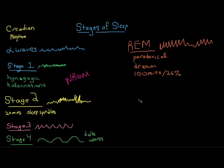This cycle repeats itself about every 90 minutes. Also interesting is that as the night wears on, you spend increasingly more time in REM sleep and increasingly less time in stages three and four, such that your last couple of sleep cycles, you might not even go into stages three and four.